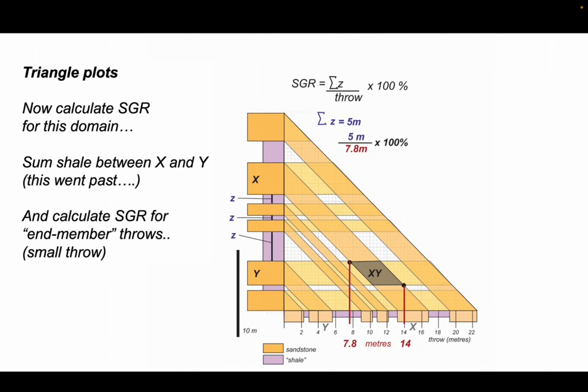Let's start with the small throw. This is a value of 7.8 meters. So we divide five meters by 7.8 meters, multiply by 100, and it gives us our shale gouge ratio of 64%.